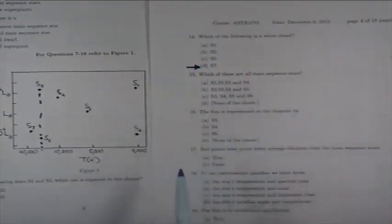Which of the following is a white dwarf, where we just went through that? It's S7. Which of these stars are all main sequence stars?